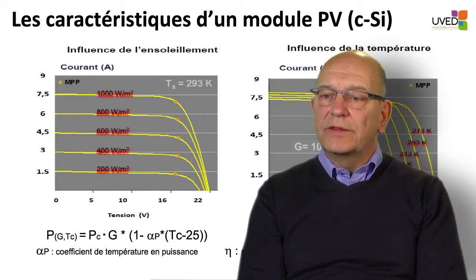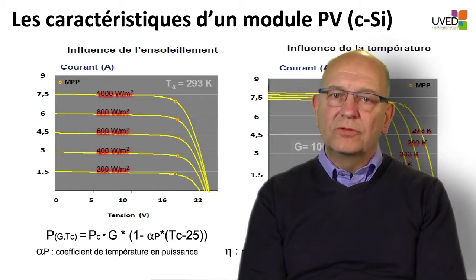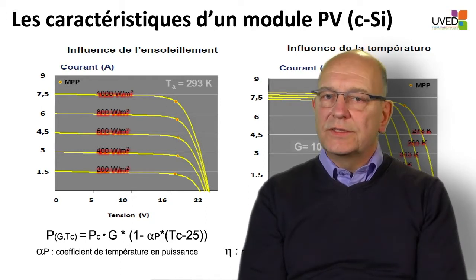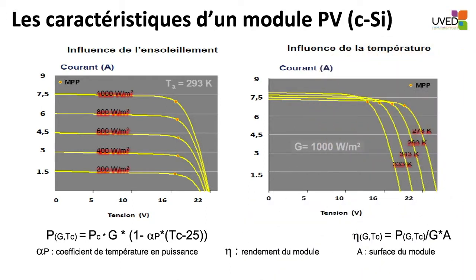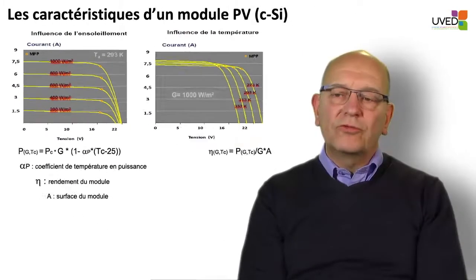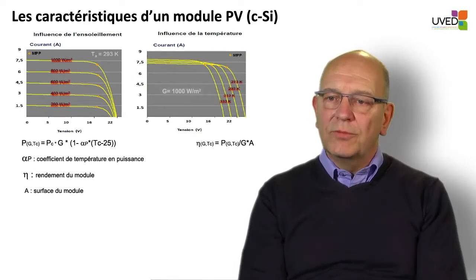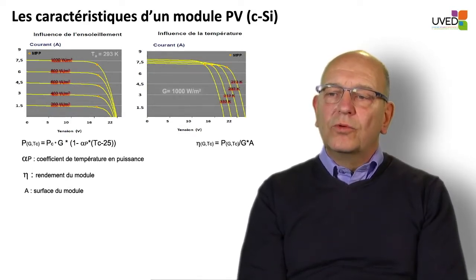A photovoltaic module operates according to a characteristic curve that varies depending on the sunshine in the module's plane and the temperature. Therefore, the photovoltaic module's power depends on weather conditions. For a given temperature, the module power will be almost proportional to the sunshine.